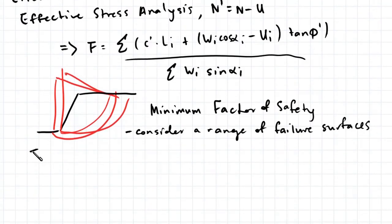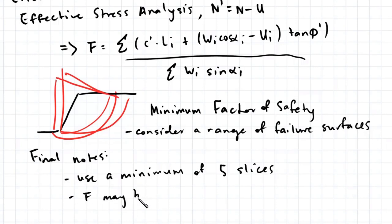Final notes on the Swedish method of slices: you should use a minimum of five slices, and because this is a very approximate method, the factor of safety may be as much as 50% on the low side.